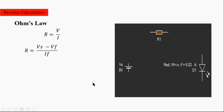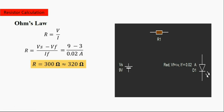Now we can calculate the resistor value. The result is 300 ohms, and 320 ohms is the nearest standard resistor value we can find.